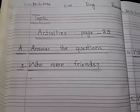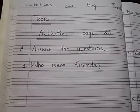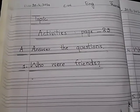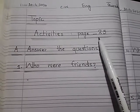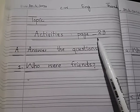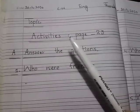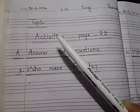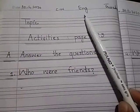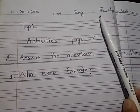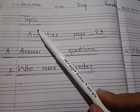Bismillahirrahmanirrahim. Assalamu alaikum dear students. I hope you are all done with your yesterday's homework — that was learning and practicing words meanings of unit 5. Now as you can see we are going to start activities of unit 5, that is on page 23. It's our written work — you will write it in your rough notebooks as usual, not in your books. Take out your rough copies and your pencils. The date is 30th April 2020, it's your classwork today, it's English, and today is Thursday.